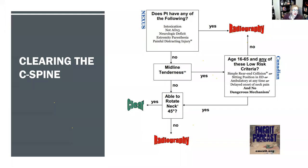One key part of the secondary survey is clearing the C-spine using the NEXUS criteria algorithm. If the patient has intoxication, you cannot simply clear the C-spine clinically. Note: if you're in a car accident and end up in the ER, you'll have lateral neck pain from muscles that snapped your head back — lateral neck pain is different from midline neck pain. Remember that distinction. The MCRIT podcast is a source for more information on this criteria if you're interested.